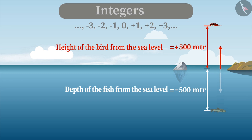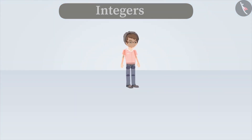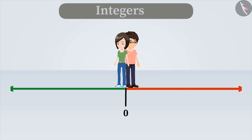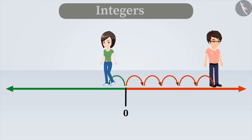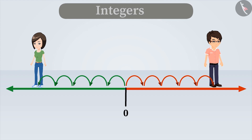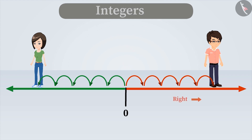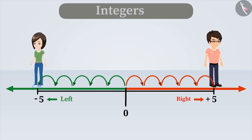It is now quite clear that plus 500 metres means 500 metres above the sea level and minus 500 means 500 metres below the sea level. Now let's consider some more examples. Suppose Rahul and Ruchika start walking in opposite directions from a point, say 0. Rahul walks 5 steps towards the right from 0 and Ruchika walks 5 steps towards the left. The steps towards the right are shown by a positive sign and those towards the left are shown with a negative sign. Therefore, Rahul has taken 5 steps and Ruchika has taken minus 5 steps.